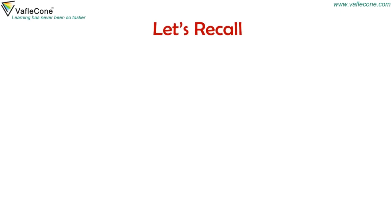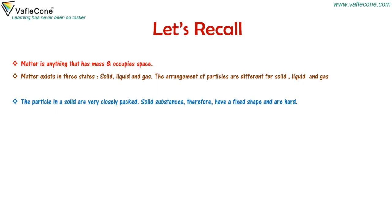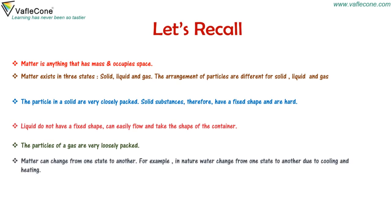Let's recall. Matter is anything that has mass and occupies space. Matter exists in three states: solid, liquid and gas. The arrangement of particles is different for solid, liquid and gas. Particles in the solid are very closely packed; solid substances therefore have a fixed shape and are hard. Liquids do not have a fixed shape and can easily flow and take the shape of the container. The particles of a gas are very loosely packed. Matter can change from one state to another. For example, in nature, water changes from one state to another due to cooling and heating.